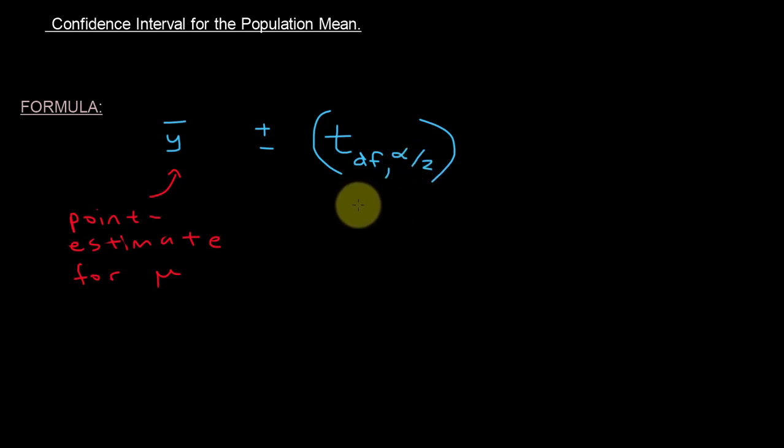So that was called the t critical value, t critical. But this t critical is also going to be multiplied by the standard error.